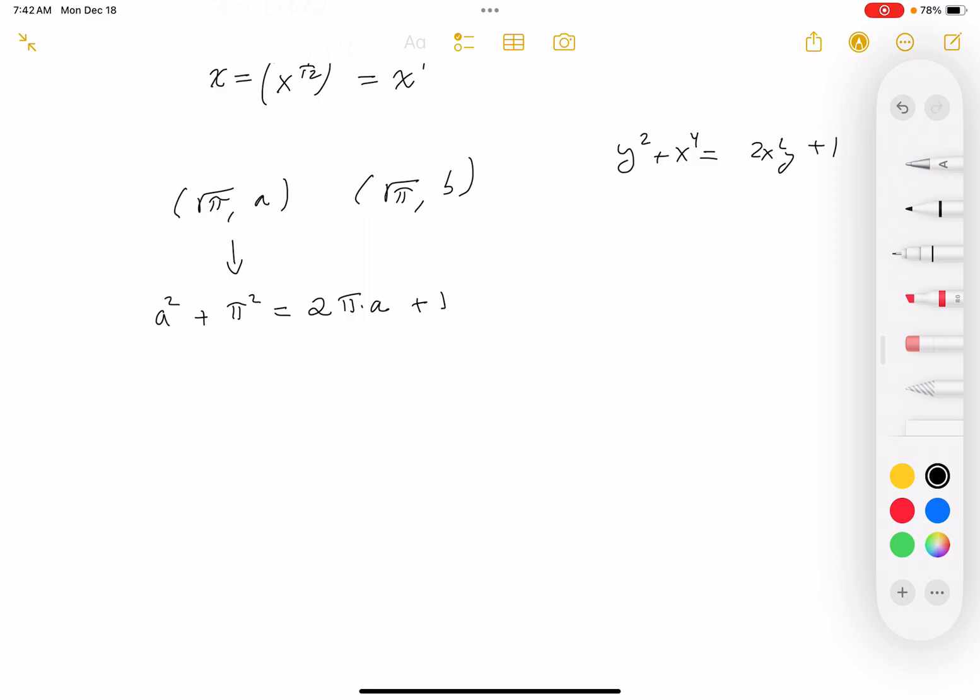What I'm going to do is start thinking that maybe factoring might be helpful and I think I see something here. I can say a² minus 2πa plus π² equals 1.